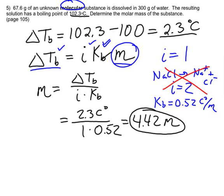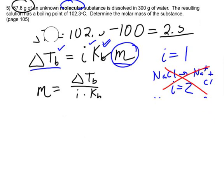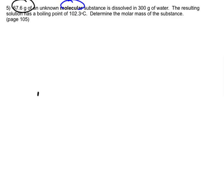Now that's not our final answer. We notice they told us how much solid dissolved, but we don't know the molar mass. So we're trying to now figure out what the molar mass of this substance is. So I'm going to erase all this and just leave what I have now, that it's a 4.42 molal solution. Now what is making up this solution? We have 67.6 grams of an unknown, let's call it x, and we have 300 grams of water.